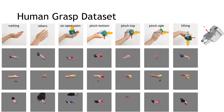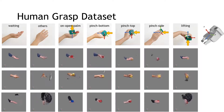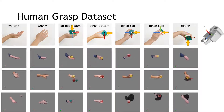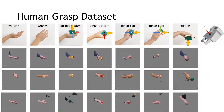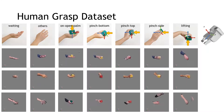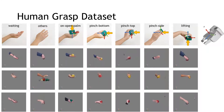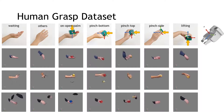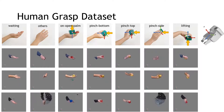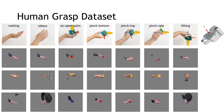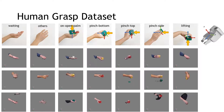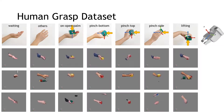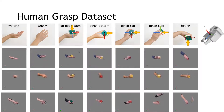The whole sequence of images is therefore labeled as the corresponding human grasp category. During the recording, the subject moves their body and hand to different positions to diversify the camera viewpoints. We recorded both left and right hands for each subject. In total, our dataset includes around 150,000 images.